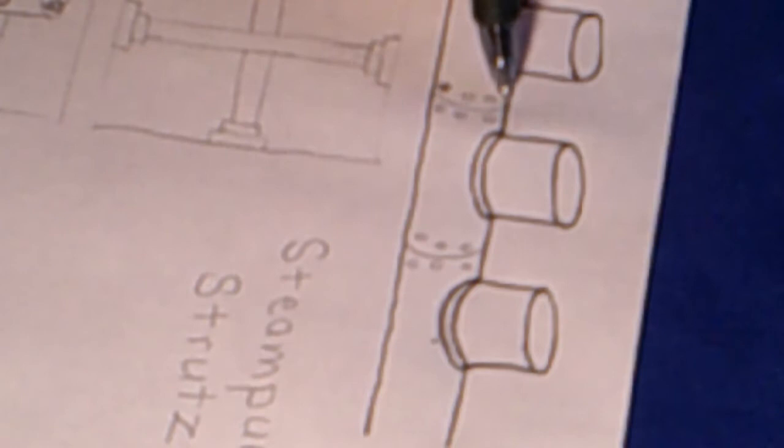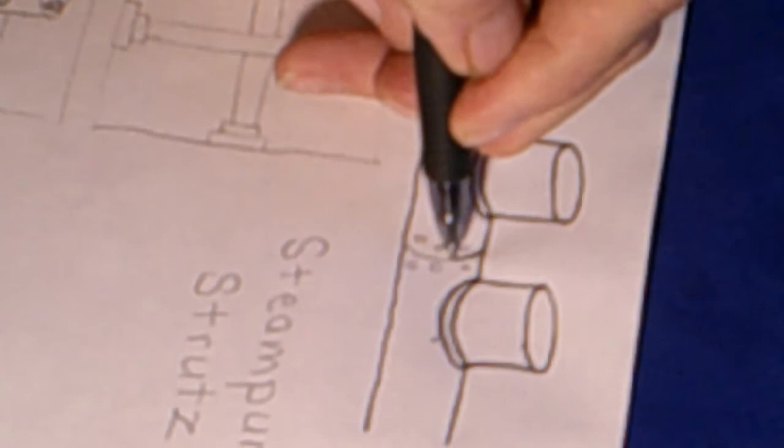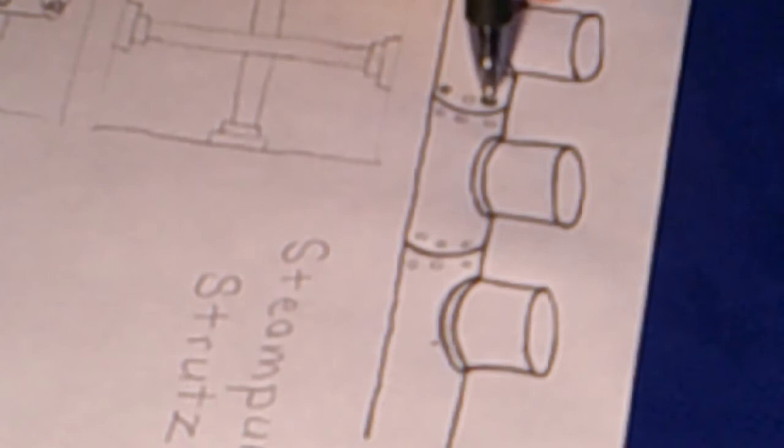Okay, now let's make the pipe look like it's in sections. We're going to do that by drawing a couple of c-shapes across it, and then we're going to put bolts on either side of that c-shape.